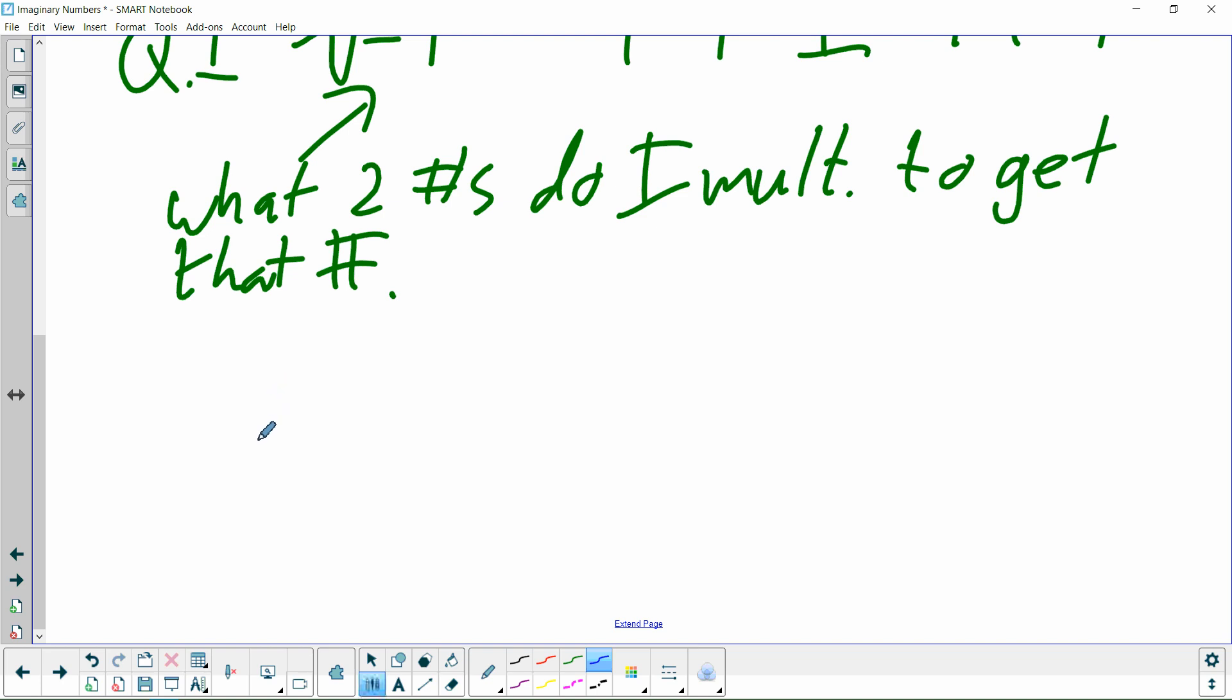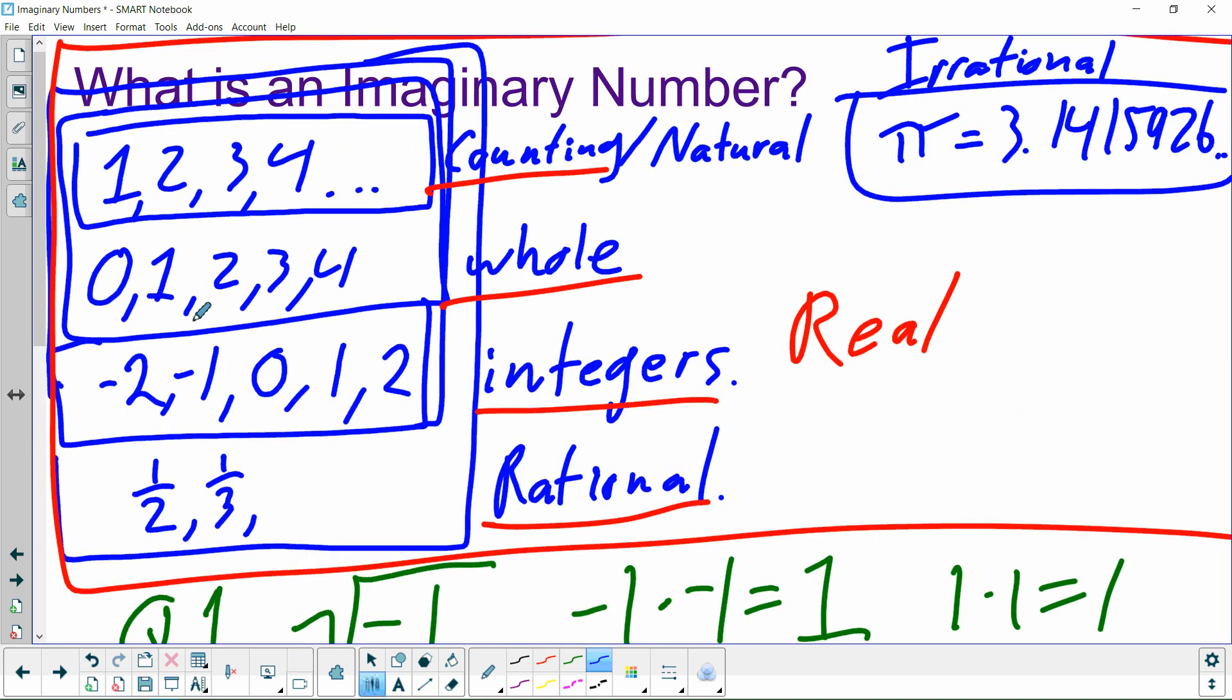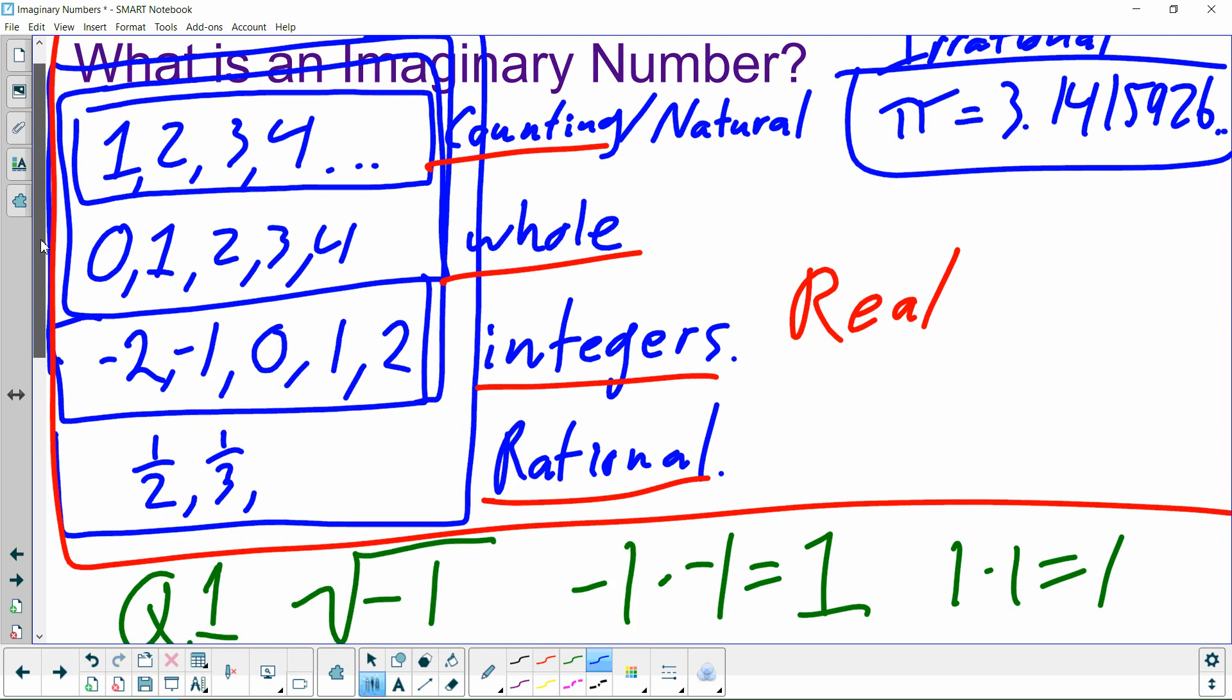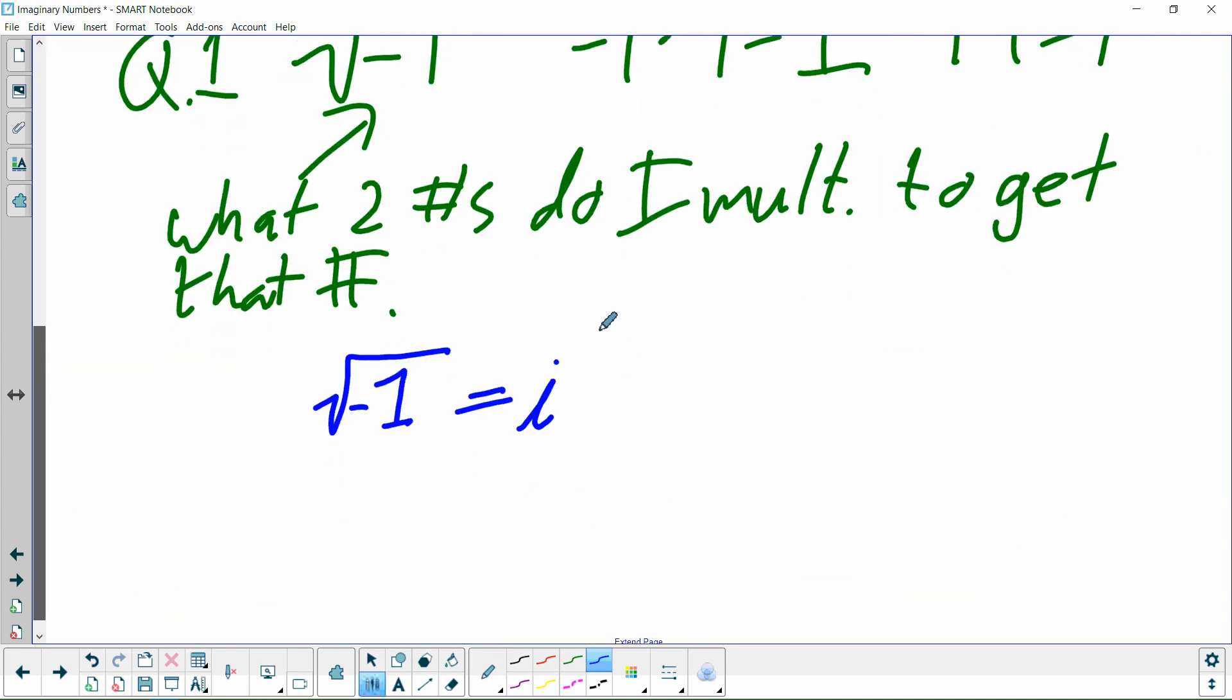So they made up a new set of numbers. And they defined it with the idea of i. And they said the square root of negative one, the answer to this question is this new number I just invented called i. And now i lives outside of this real number block. It is a whole different set of numbers nowhere in this organization structure. It's its own thing. This is an imaginary number.